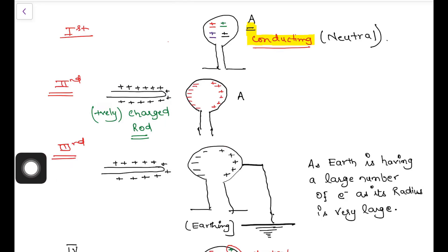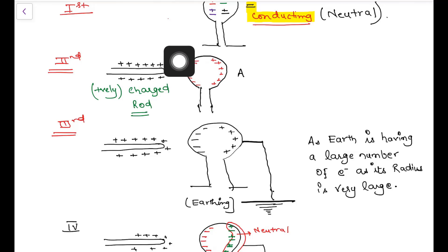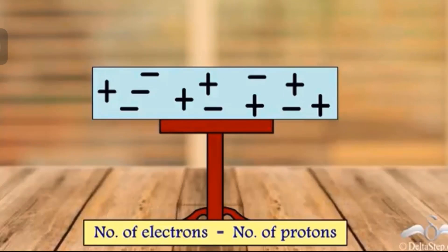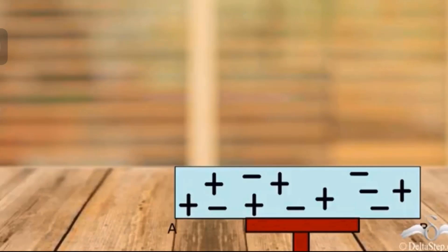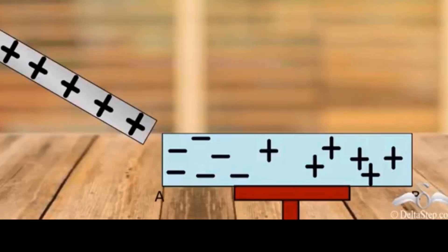Suppose I place a positively charged body at some distance. Then the charges will separate — negative charge will come to the near surface and positive charge will go to the far surface. This means charge will get separated inside our conducting body, so the body must be conducting in nature.